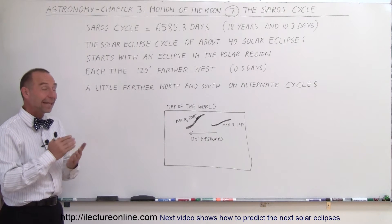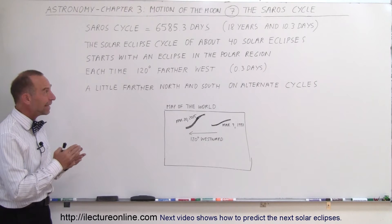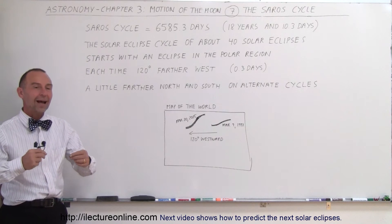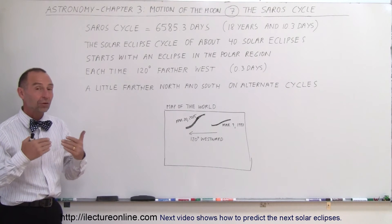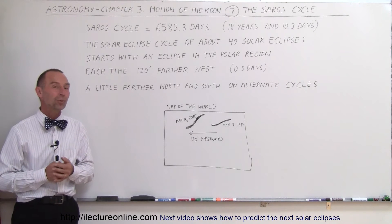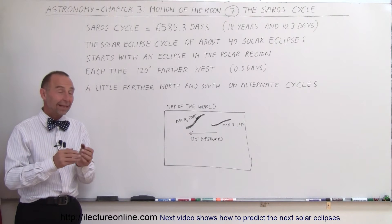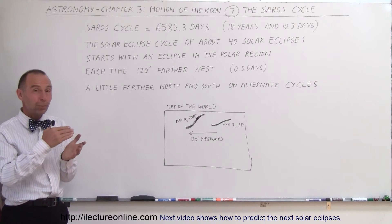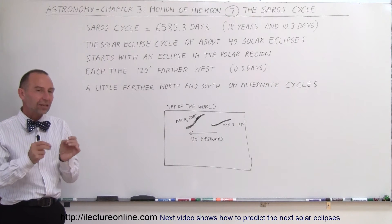It was discovered that every 18 years and 10.3 days, an entire cycle will repeat itself in the way solar eclipses occur, a total of 6,585.3 days. What that means is that 18 years, 10.3 days later, the entire cycle repeats.